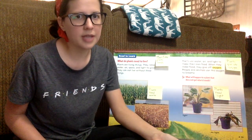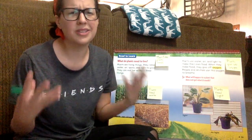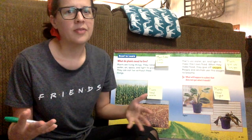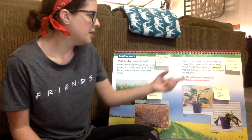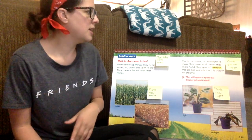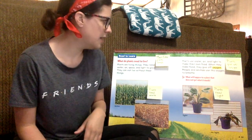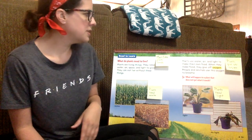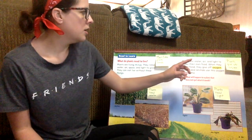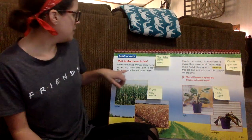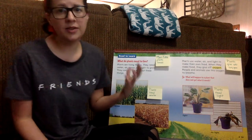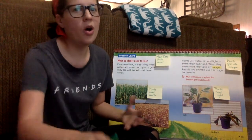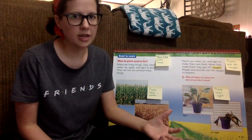You might see three more details that you could use — it also said that people and animals use oxygen, it also said that plants need space to grow, it also said that plants are living things. All these things are details, so you don't have to have the same three details Ms. Craig has.